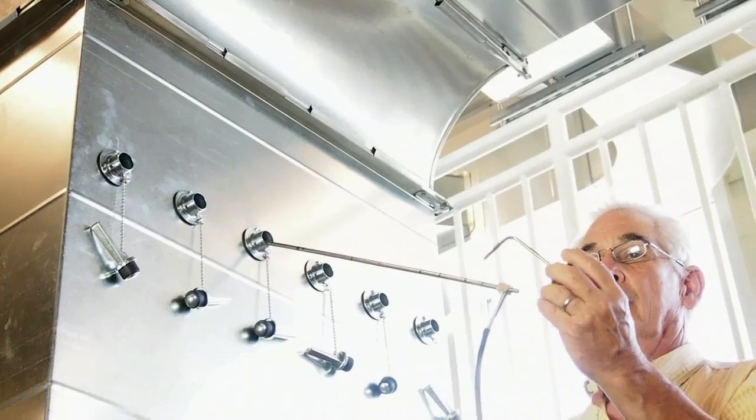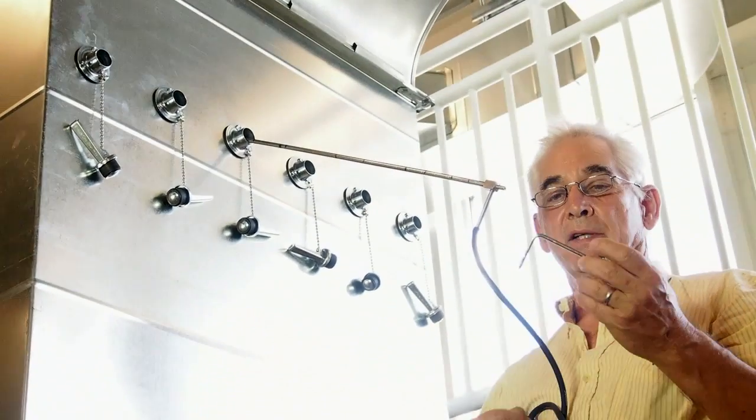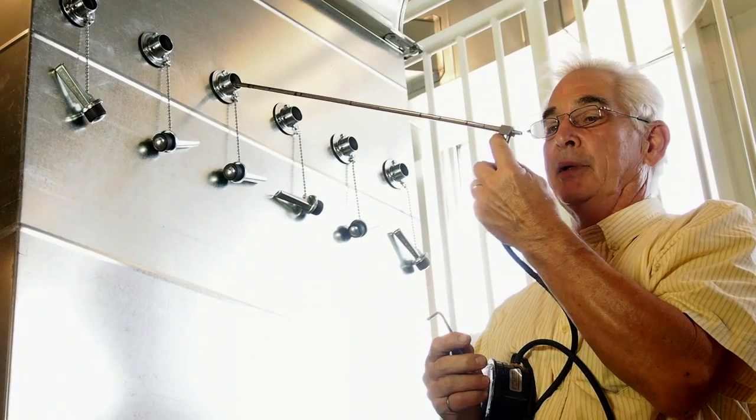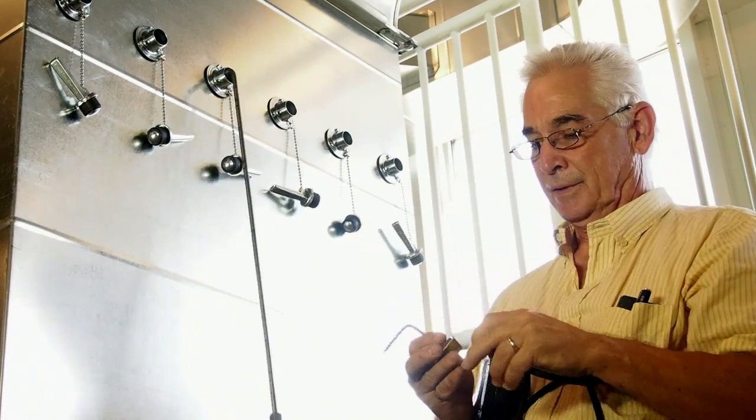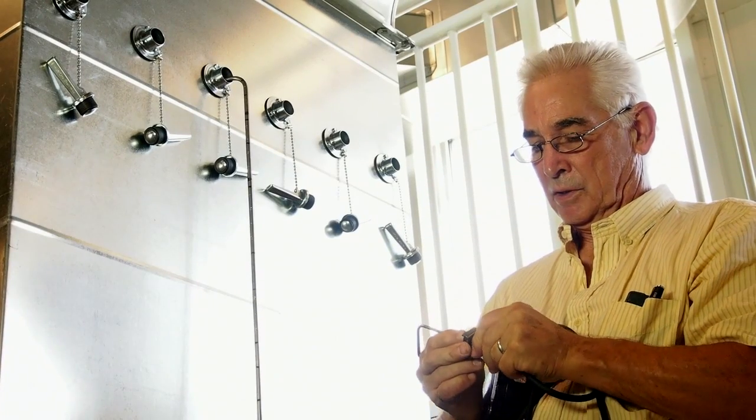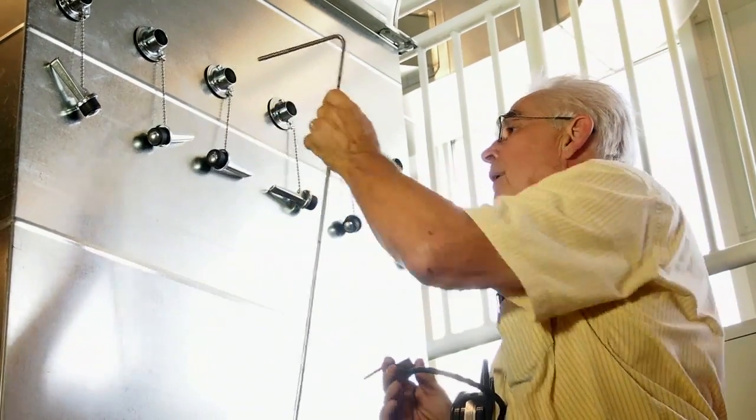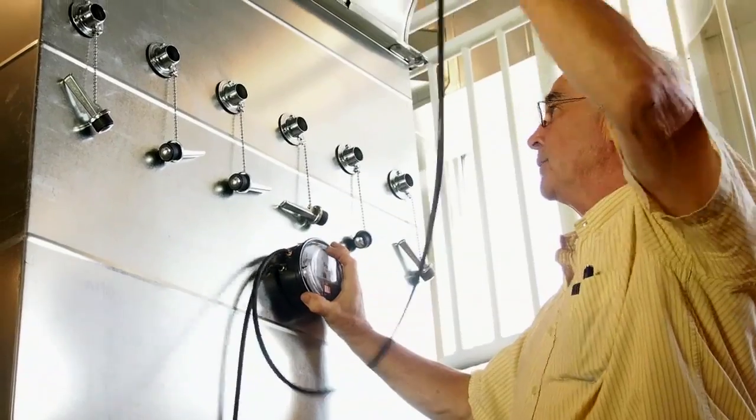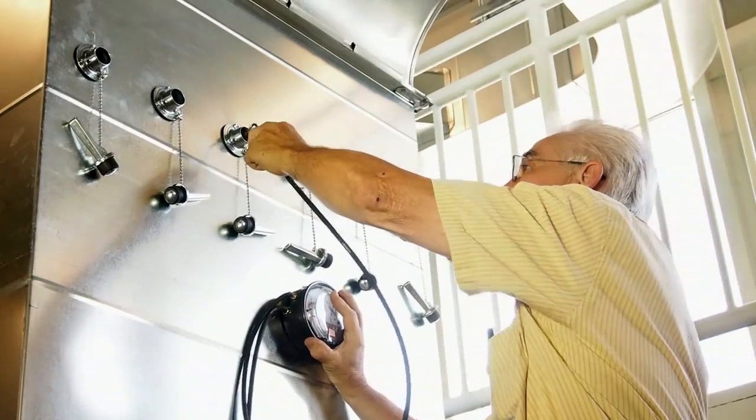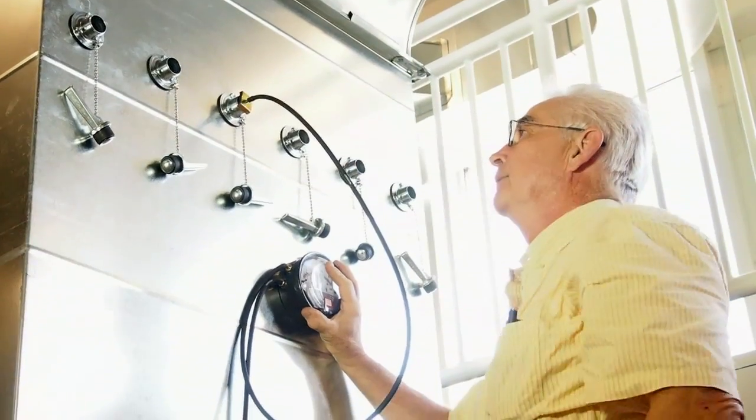The other instrument we could use is a static pressure tip. And the static pressure tip just has sensors at the side, like the pitot tube, but it doesn't have a total pressure. So we could use a static pressure tip to take the static pressure if we want it. Just like that.